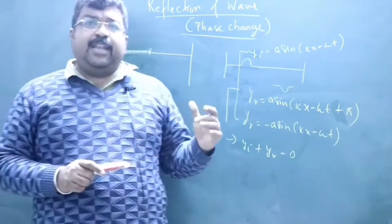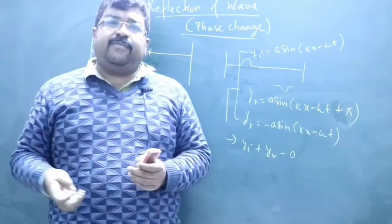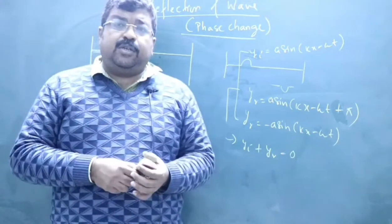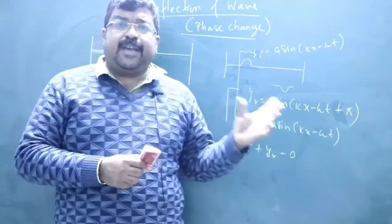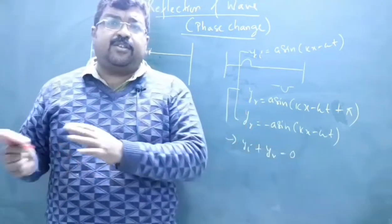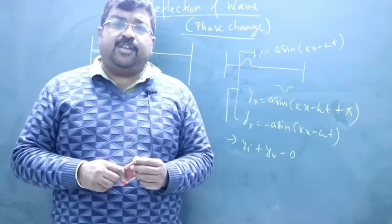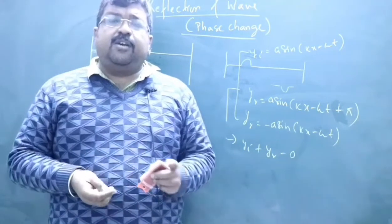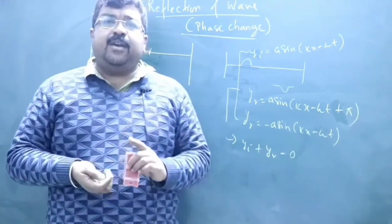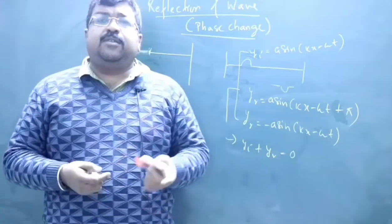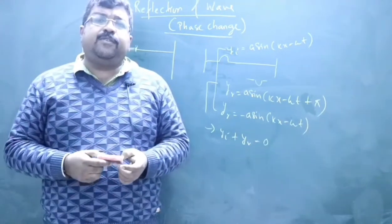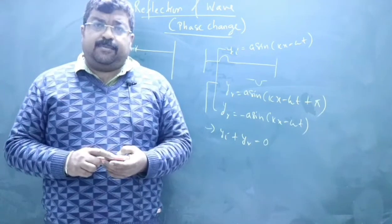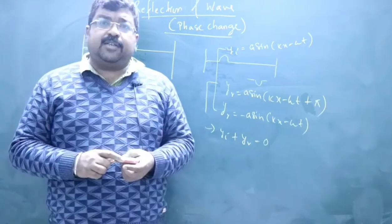There is one more phenomenon: transmission. For mechanical waves we call it transmission; for light traveling from one medium to another we call it refraction. Whether it is transmission of mechanical waves or refraction of light, there is never any phase change — phase change is zero. To summarize: for reflection from a denser medium, phase changes by pi; for reflection from a rarer medium, phase change is zero. I hope this video is beneficial and helpful for clearing your concepts. Best wishes for your academic endeavors — good luck.